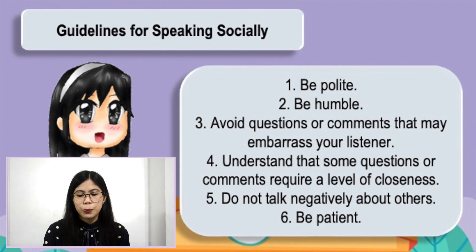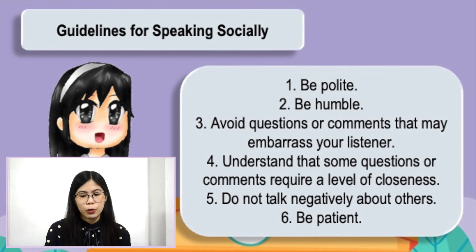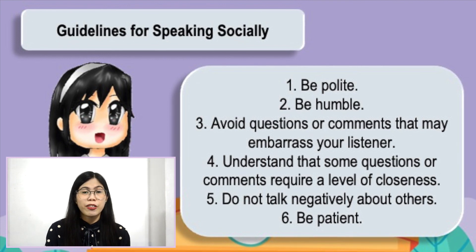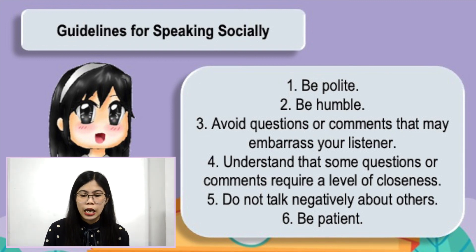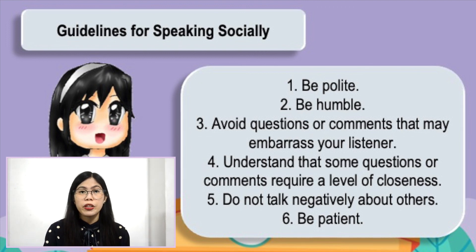Number five: do not talk negatively about others, because this will not develop relationships but rather ruin them. Last, number six: be patient. Sometimes you will experience difficulty in relating to others because they do not behave or say things the way you expect. This will demand patience from you. Those are some of the guidelines you may follow in speaking socially.